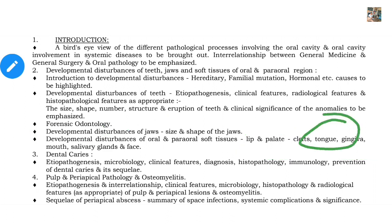In the tongue, there are 2-3 important terminologies like median rhomboid glossitis and geographic tongue. All these are asked in viva, so they are very important. The next topic is dental caries, which is very important.